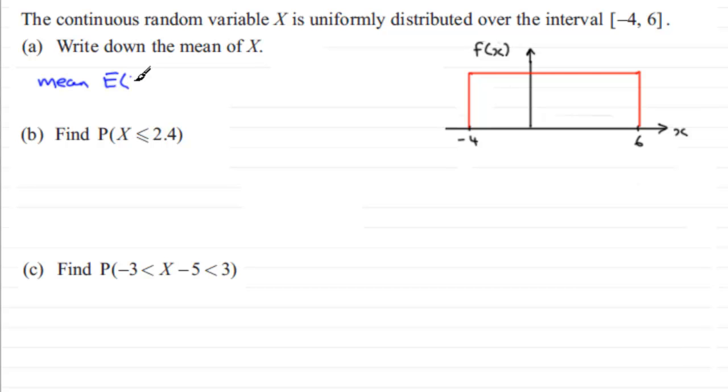So we've got minus 4 plus 6 and you divide it by 2, and if you work that out you end up with 1 - the value right in the middle.